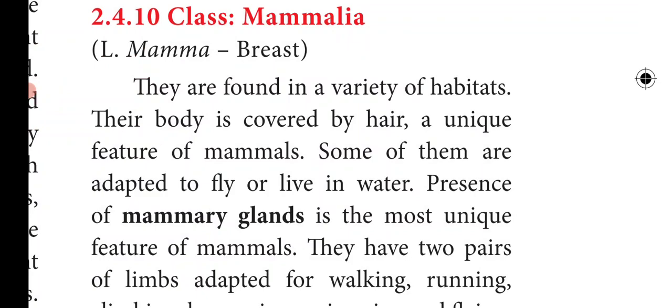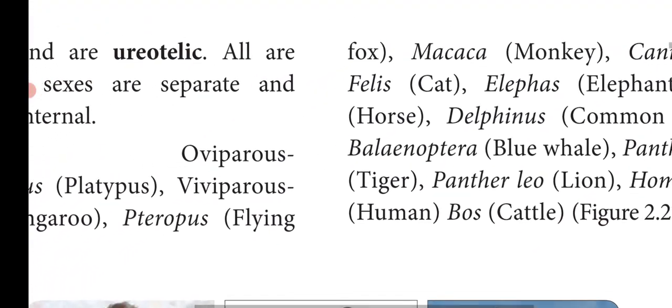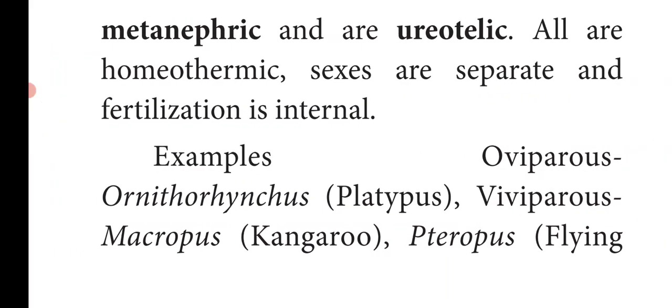Mammals have a large brain and show the greatest intelligence among all animals. Kidneys are metanephric, meaning well-developed or advanced kidneys. The excretory waste product is urea, so they are called ureotelic. All mammals are homeothermic — warm-blooded animals. Sexes are separate, and fertilization is internal, taking place inside the body.